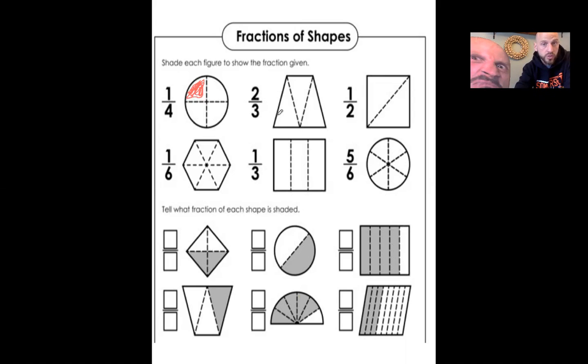So if this says two-thirds, that means there's one, two, three pieces where that shape is broken into three pieces. And then I'm going to color in, I'm gonna shade in two pieces. Should have read the directions first because it does say, shade each figure to show the fraction. So we jumped right in there. So this is my second one. And two of those pieces are shaded now.